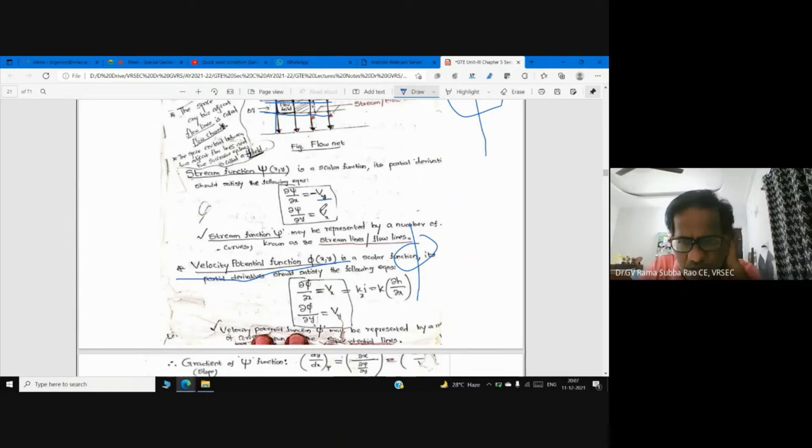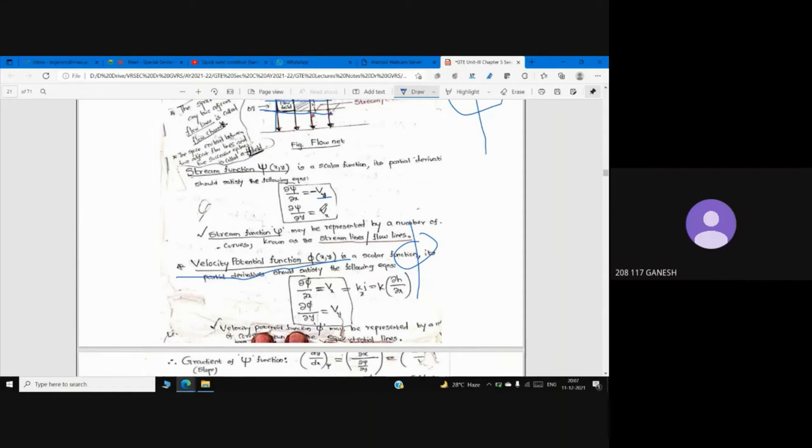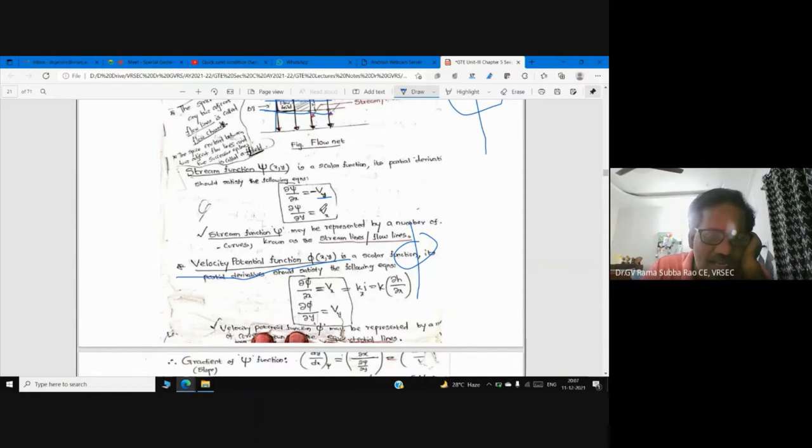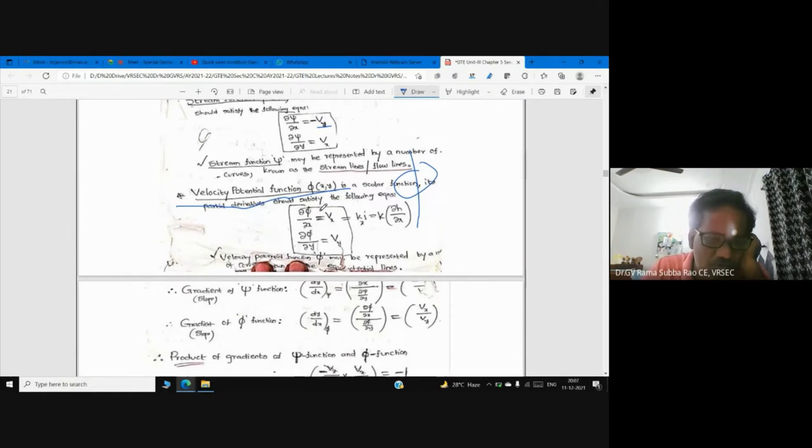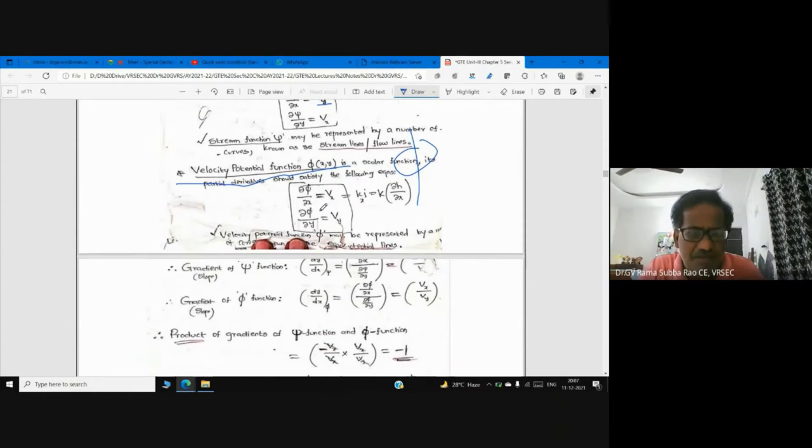Flow net is a combination of stream lines and equipotential lines. Please don't forget that.